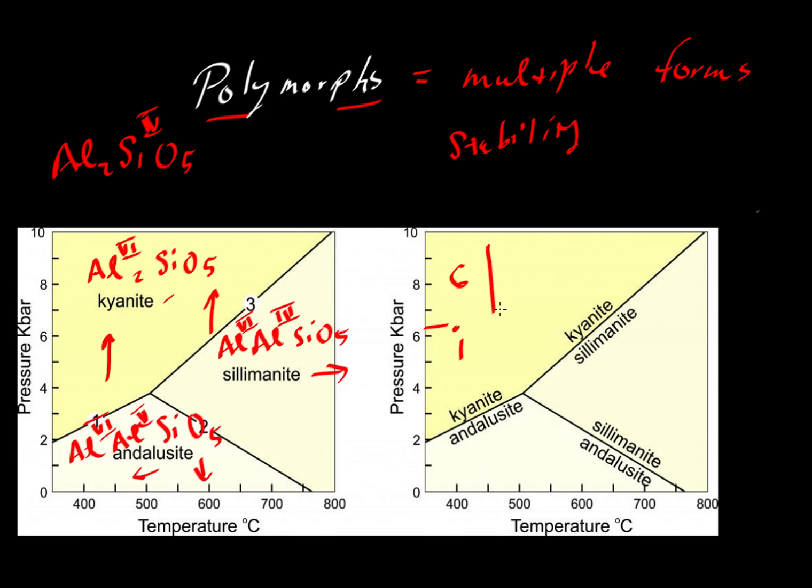So what would the Gibbs free energy look like? Well, if we're going to compare something like kyanite to andalusite, the kyanite would be more stable. It would have a lower Gibbs free energy than the andalusite.